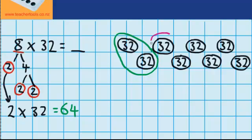Now if I was to circle another 2 groups over here, you can see I would have 2 groups which equal 64. So I can record that over here as 2 groups of 64. And I know that the answer to that is 128.